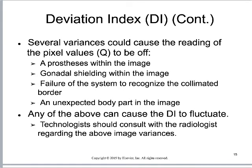This system's not perfect, and if you want detailed information you have to go back to the vendor-specific exposure index. The deviation index just gives you underexposed, overexposed, or you're good. There are things that can throw the deviation index off: poor centering, presence of hardware or a prosthesis, bilateral studies where the patient is missing a portion of anatomy like a finger, and gonadal shielding would all throw the deviation index off.